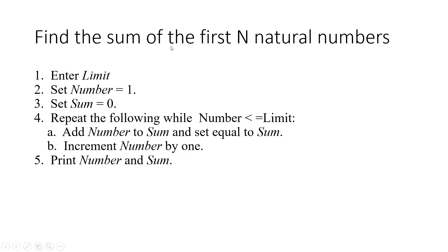Another algorithm to find the sum of the first N natural numbers. Step 1: enter limit. Step 2: set number equal to 1, set sum equal to 0. Step 3: repeat the following while number is less than or equal to limit — add number to sum (sum = sum + number), increment number by 1. This is repeated until the number becomes the limit. Step 4: print number and sum.